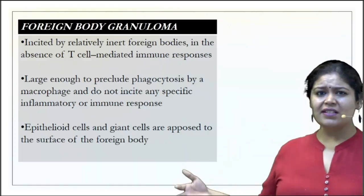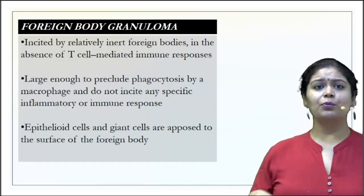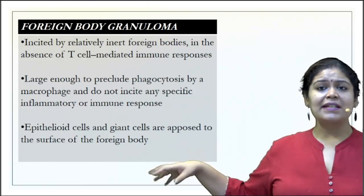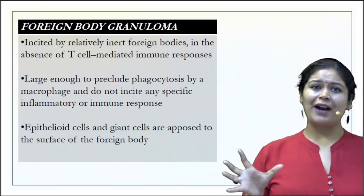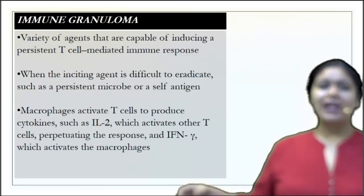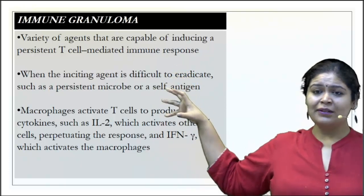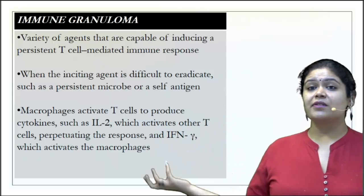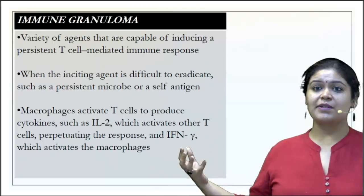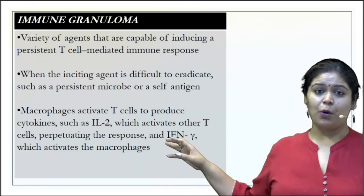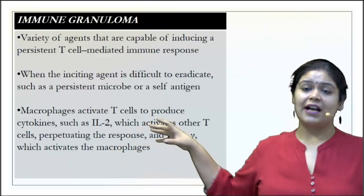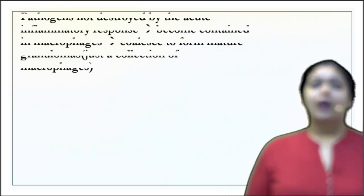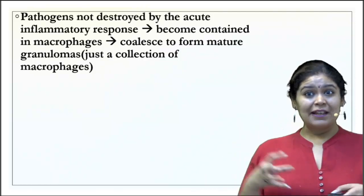A foreign body giant cell is classically seen with inert foreign bodies in the absence of a brisk T-cell immune-mediated response — it simply physically barricades the foreign body, with epithelioid and giant cells close to the surface trying to phagocytose it. An immune granuloma, on the other hand, involves a persistent T-cell mediated response, occurring when the inciting agent is difficult to eradicate — such as a self-antigen in sarcoidosis or a persistent microbe like TB. Helper T cells secrete interferon-gamma, recruiting and activating more macrophages, releasing more cytokines, forming a compact mass called a granuloma.